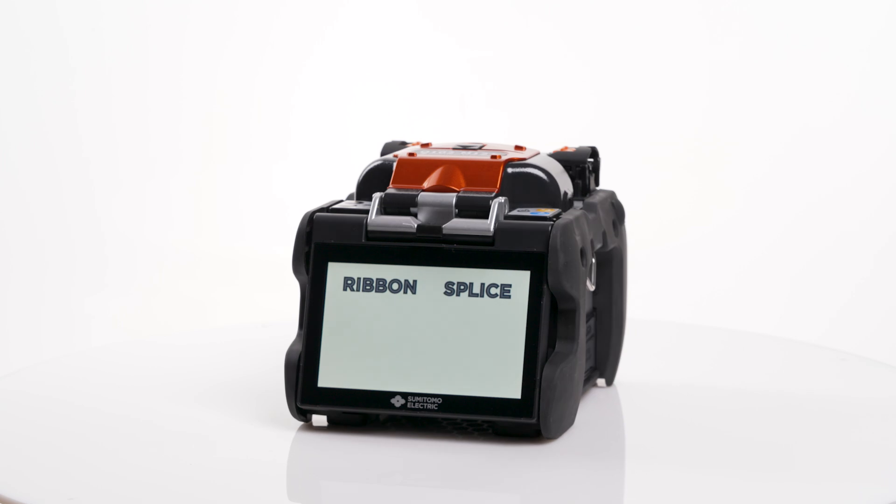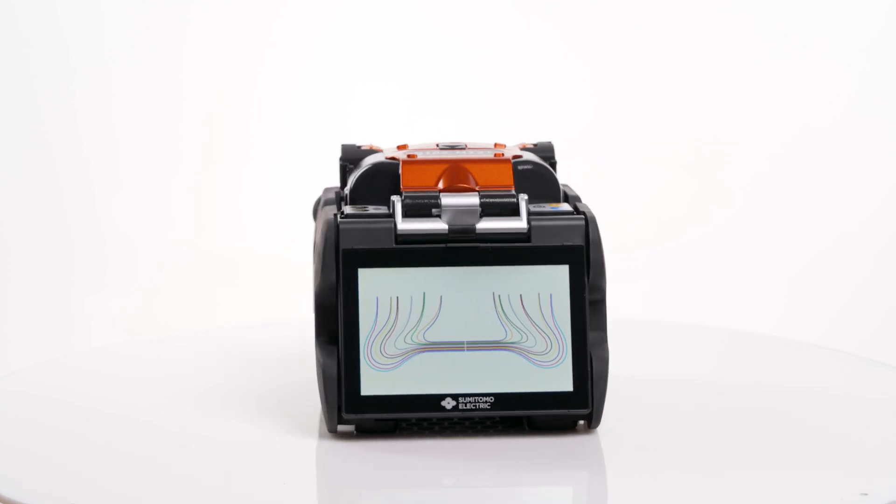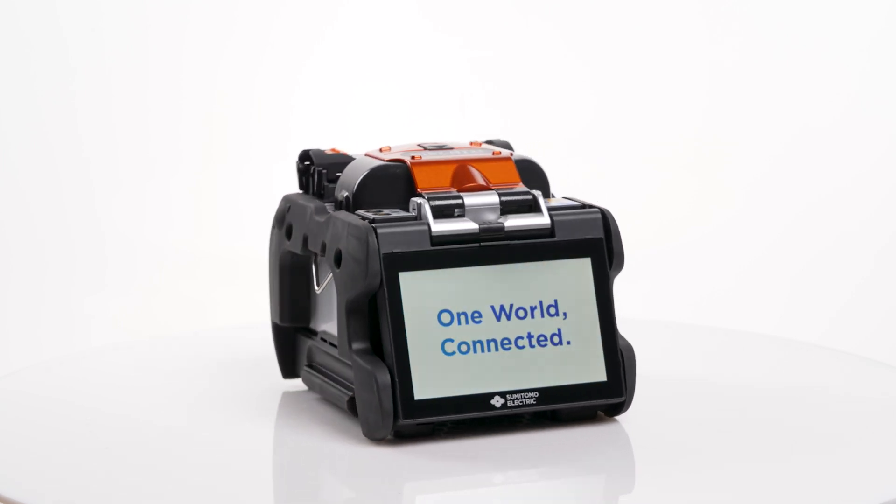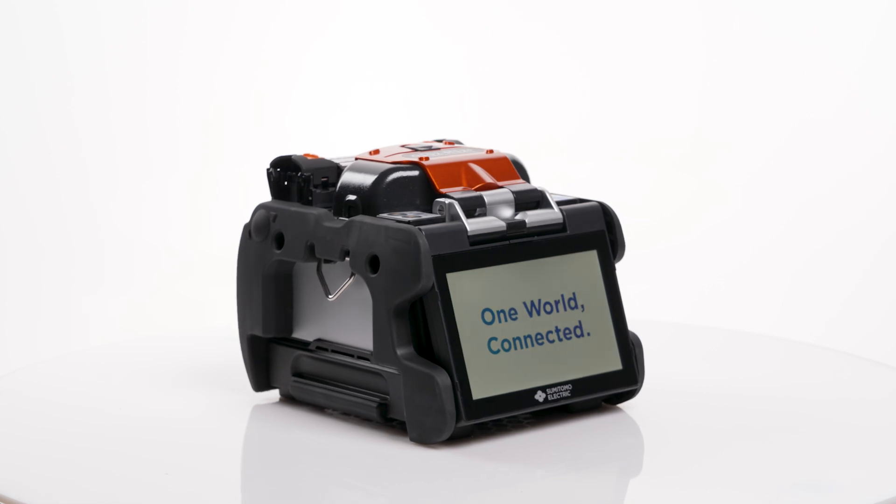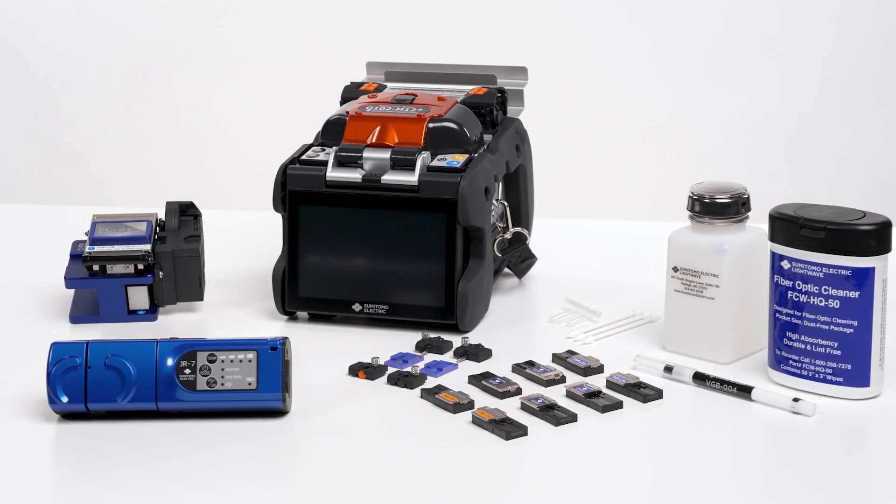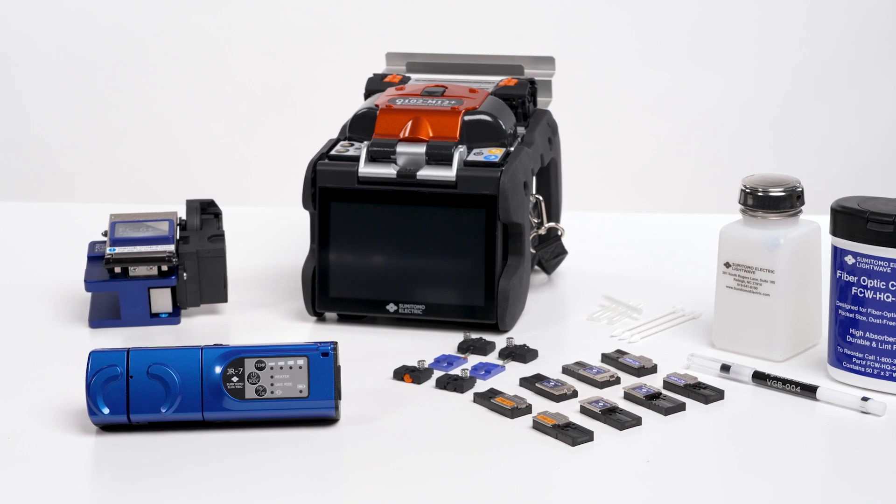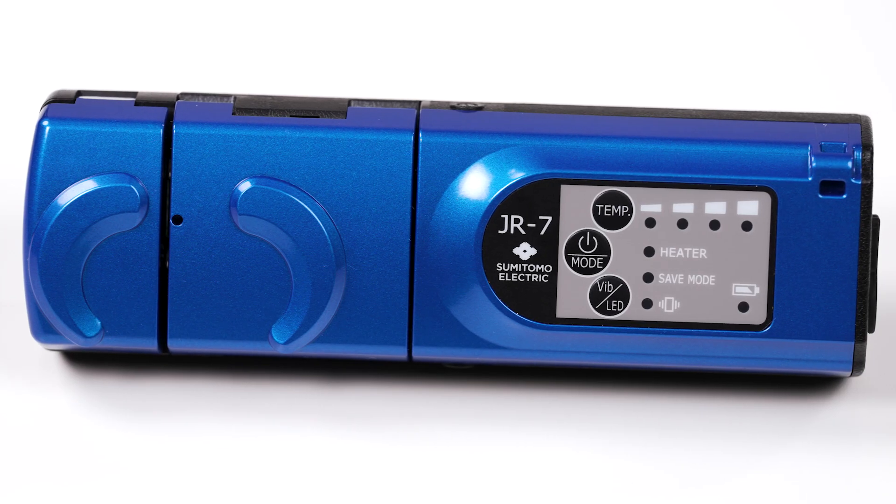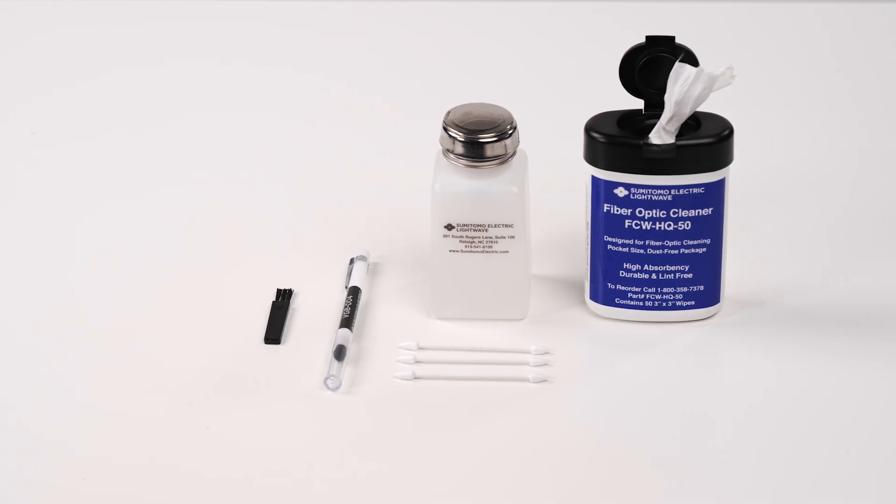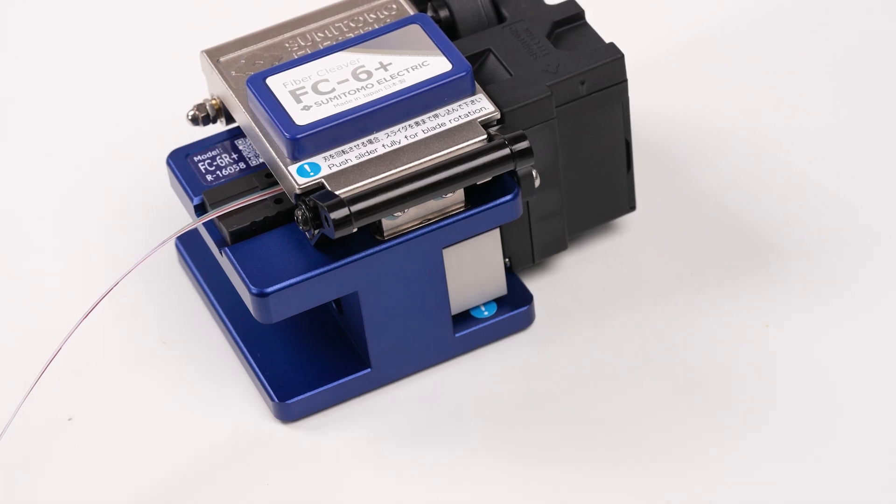For this demonstration we're going to be using Sumitomo Electric's newest ribbon fiber fusion splicer, the Q102 M12+. Use Sumitomo Electric's line of tools and accessories for ribbon fiber preparation including the JR7 thermal jacket remover, glass cleaning fluid, ribbon fiber holder and cleaver.